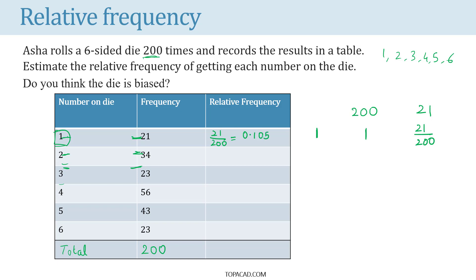Similarly, the probability of getting number 2 on the die is 34 by 200 which is equal to 0.17.